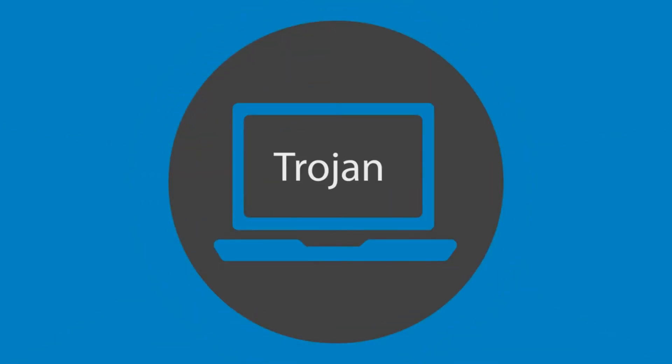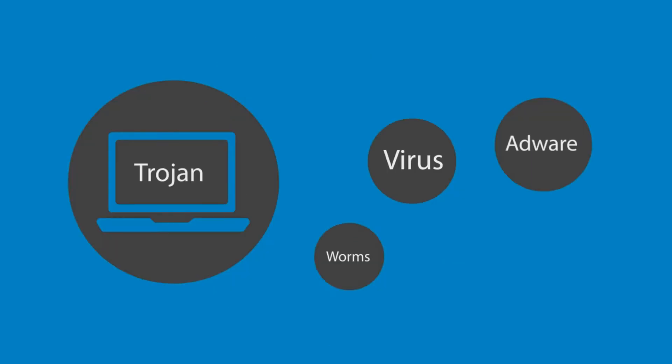A Trojan Horse is software that, when it arrives, allows the entrance of other malware into your system.